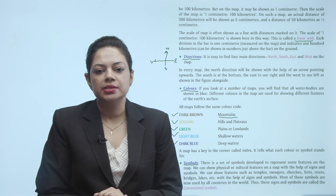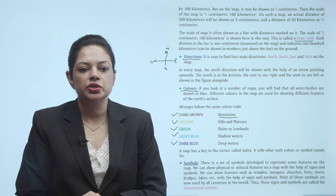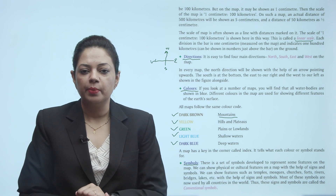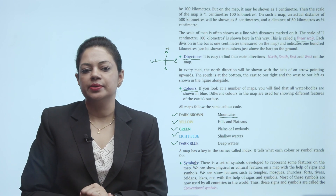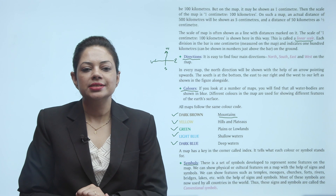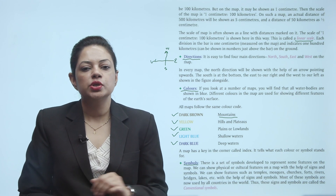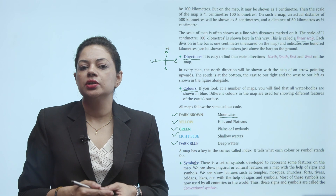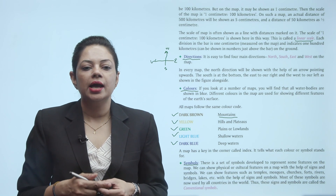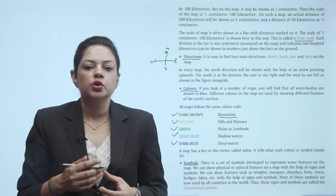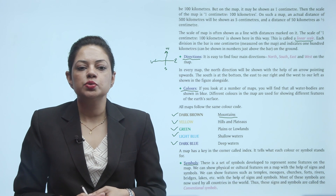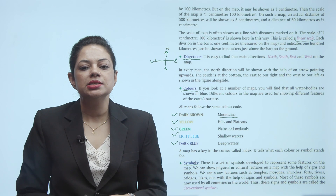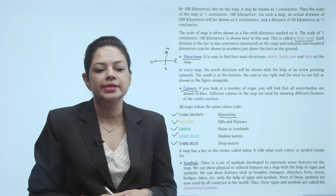There is a set of symbols developed to represent some features on the map. We can show physical or cultural features on a map with the help of signs and symbols — such as temples, mosques, churches, forts, rivers, bridges, lakes, etc. Most of these symbols are now used by all countries in the world. Thus, these signs and symbols are called conventional symbols.